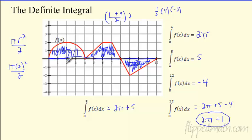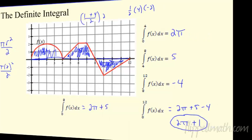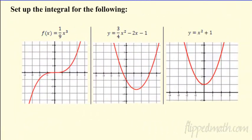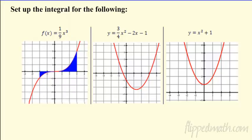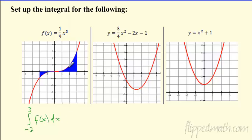So the integral from 0 to 12 is 2π plus 1. Now, can we set up an integral given a function? I've given you the picture — this is (1/9)x³, graphed right here. If I want to write the integral for this shaded region, it will be the integral from negative 2 all the way up to 3. You can write f(x) or put the full function in there.